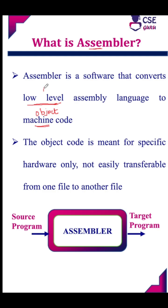For example, if you perform addition, the mnemonic code is ADD. For multiplication, it is MUL. These mnemonic instructions are accepted as input and converted into machine code.